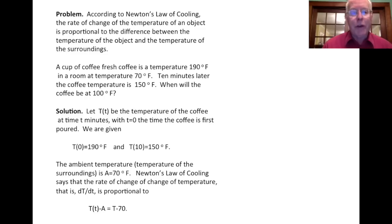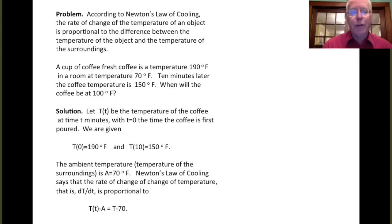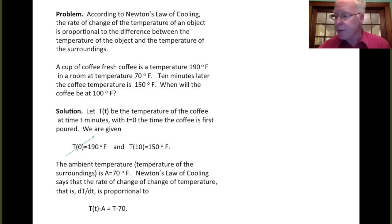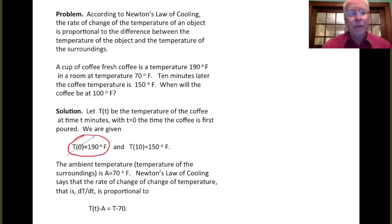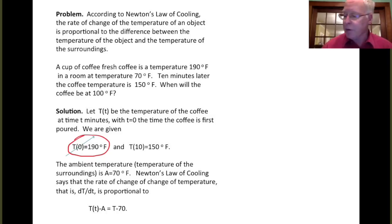Let T(t) be the temperature of the coffee at time t, where t is measured in minutes. We'll let t equal 0 be the time the coffee is first poured. So we are given that T(0) equals 190 degrees. This is an initial condition, and we have the extra condition that T(10) equals 150 degrees.